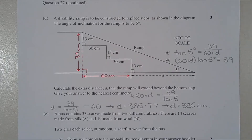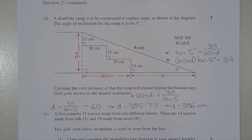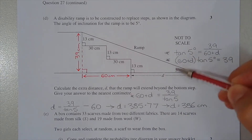Question 27D: a disability ramp is to be constructed with an angle of inclination of 5 degrees. We need to calculate the extra distance d that the ramp extends beyond the bottom step, to the nearest centimetre. This is a right angle triangle problem. We need trigonometry — either sine, cos, or tan — since we only have one known side.